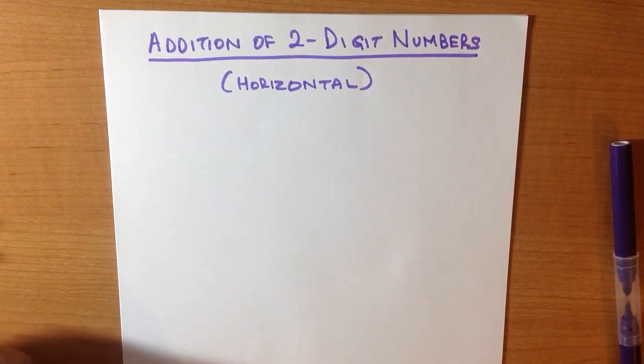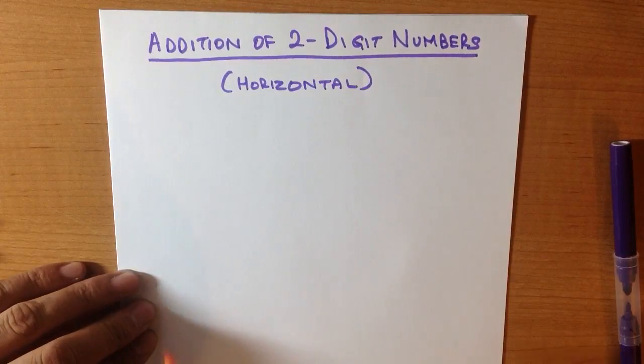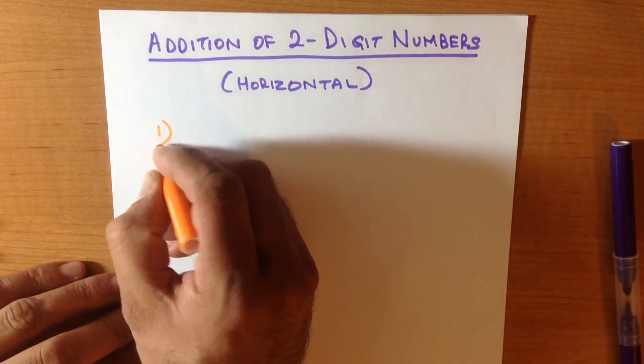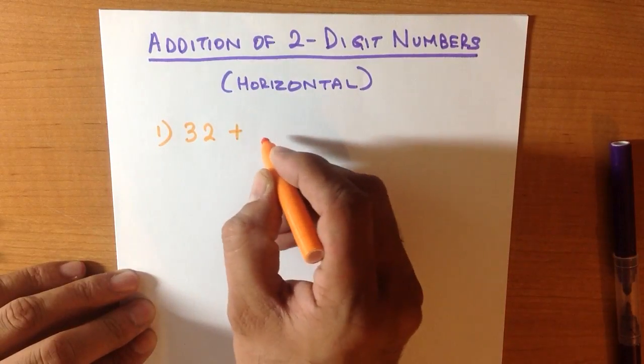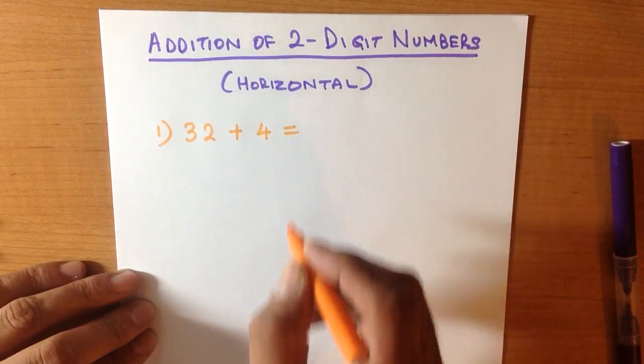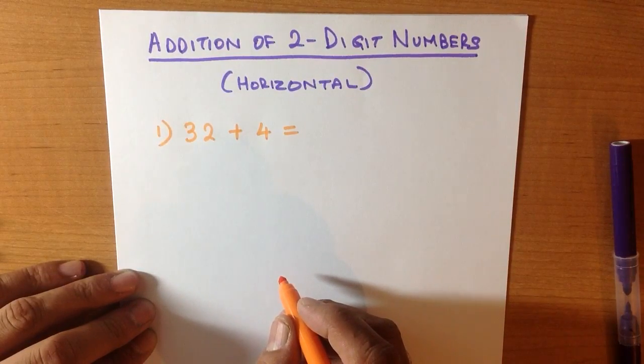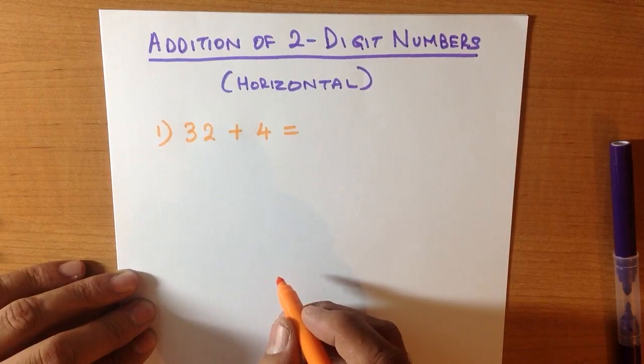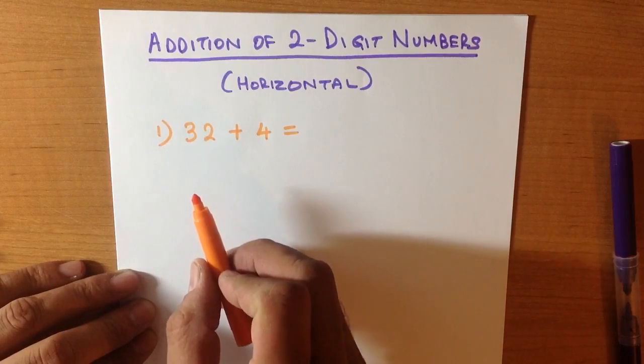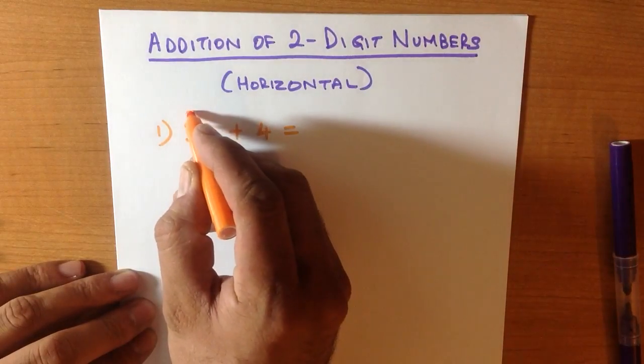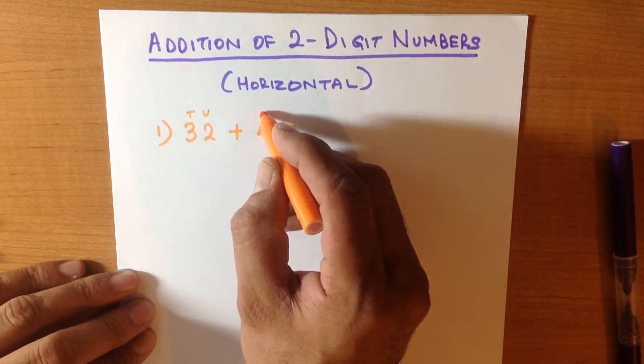Now let's work through a very simple example with a two-digit number adding a one-digit number. So what is 32 plus 4? Now that's quite easy, but let's use the horizontal method to add these numbers together. We look at the numbers on the right first, the units. We can label these: the tens, the units. 4 is just a unit.